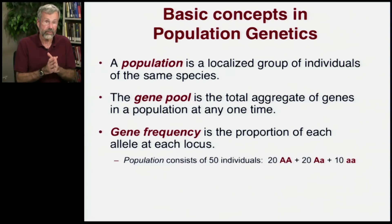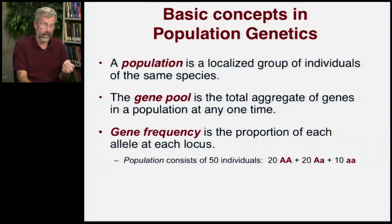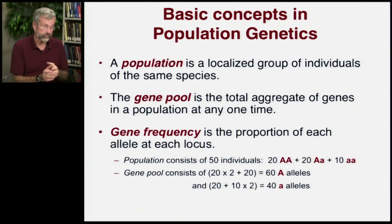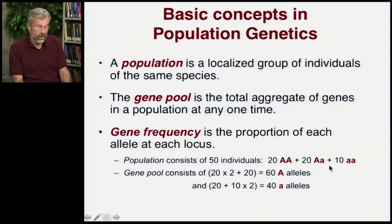Let's say we have a population that consists of just 50 individuals. 20 of them are homozygous for the capital A allele, 20 are heterozygous, and 10 are homozygous for the recessive little a allele. The gene pool consists of counting up how many capital A and little a alleles there are. So there are 20 times 2, plus 20 times 1 — a total of 60 capital A alleles. And then there are 20 single little a alleles plus 10 times 2, so a total of 40 little a alleles.